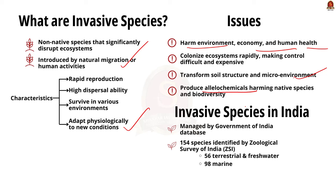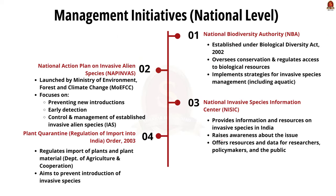The Government of India maintains and updates its database of invasive species as per information received from the Zoological Survey of India (ZSI). A total of 154 species of faunal communities — including 56 species from terrestrial and freshwater ecosystems and 98 species of marine ecosystems — are recorded from India as exotic or invasive species.